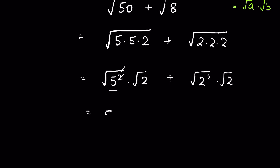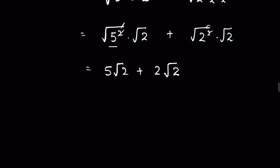This gives us 5 times square root of 2, plus 2 times square root of 2. Now, to add these radicals, we cannot just add them directly — we take the common factor square root of 2 out.